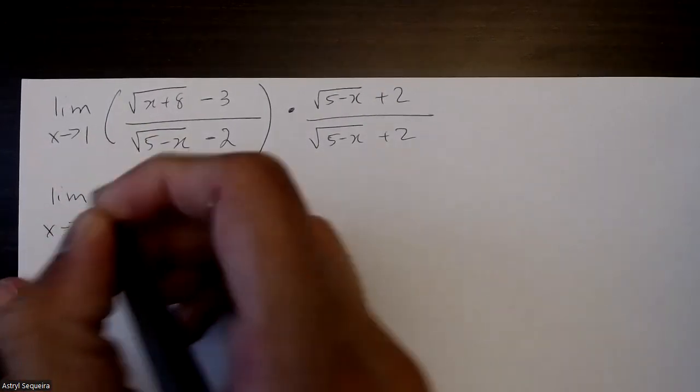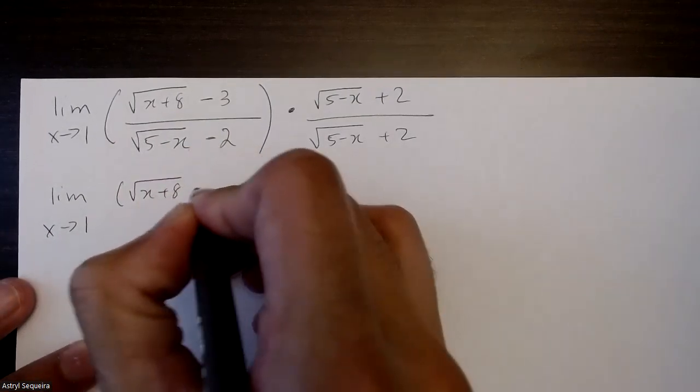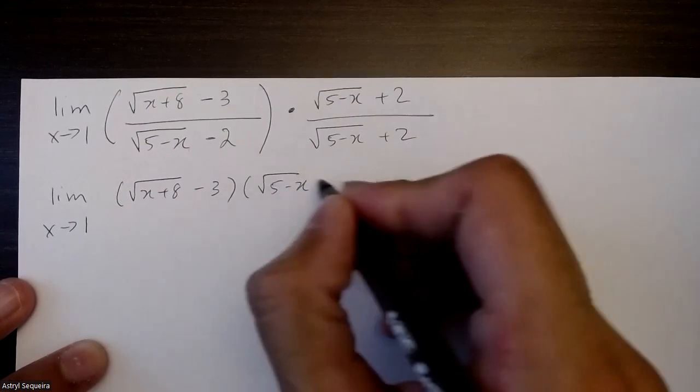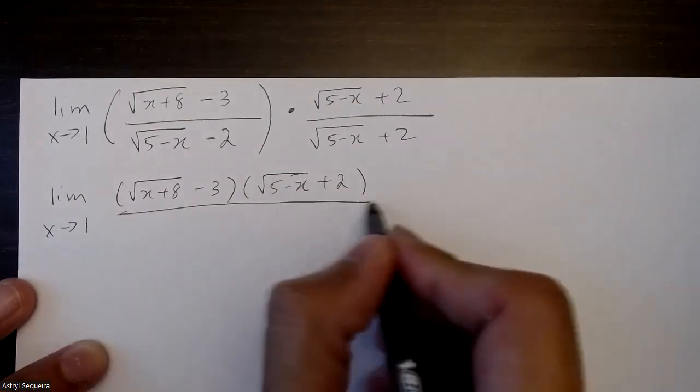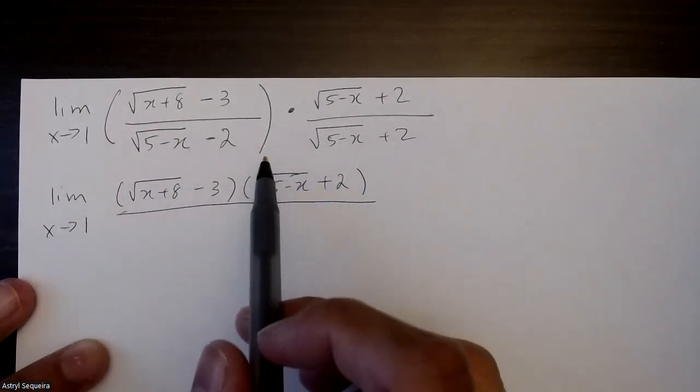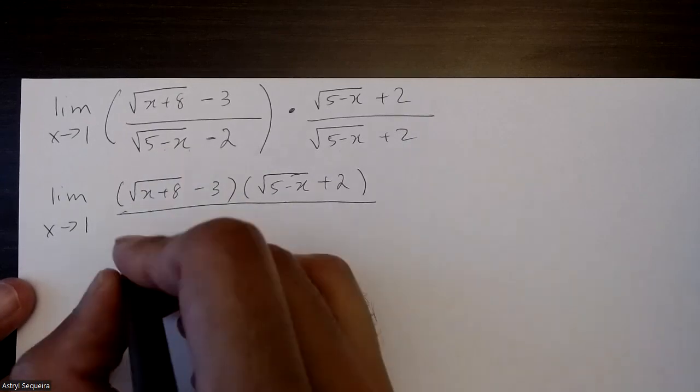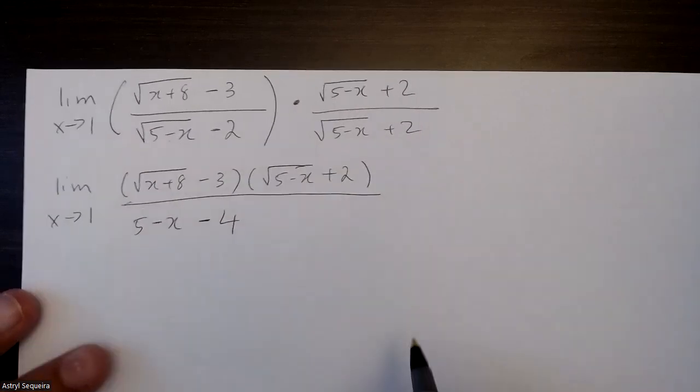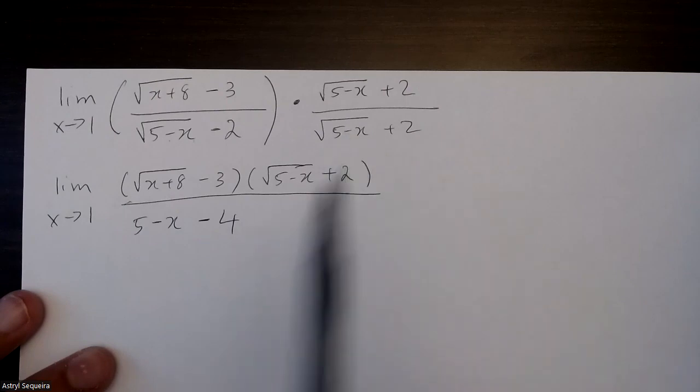So the top is going to be exactly the same. And for the bottom, I know this is a difference of squares. I don't have to worry about the middle terms. So I'm just going to do the first and the last term. The first term is just 5 minus x and then minus 4. The root of something times the root of something is just that term inside.